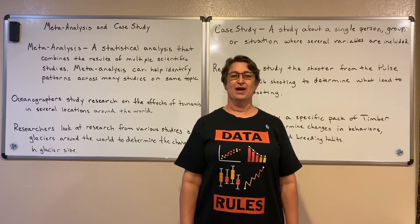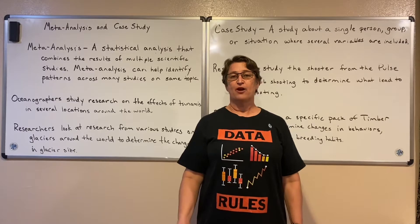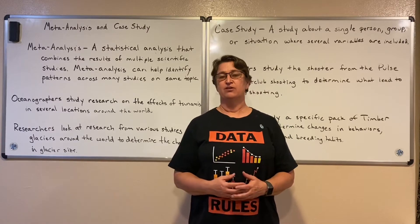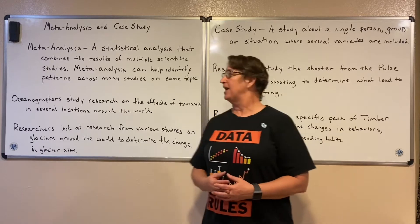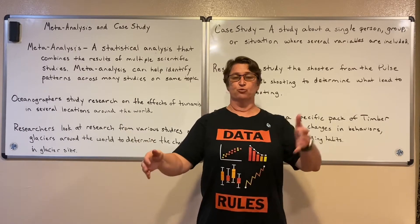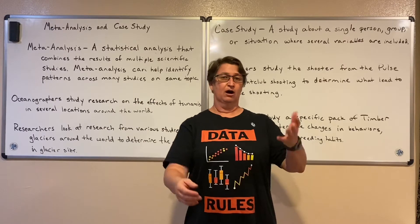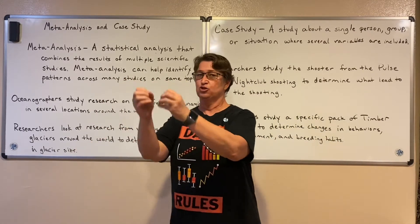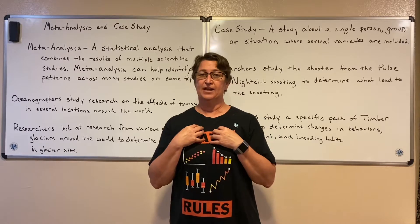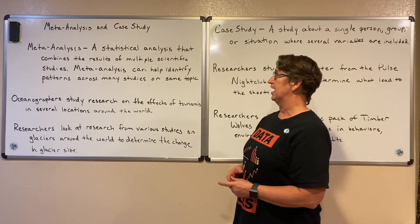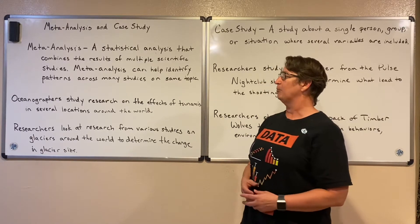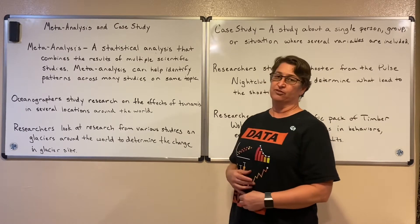Hello, I'm Patti Simpson with SimpsonMab. In statistics there are various ways to do different studies. Let's look at a couple of different types of studies: the meta-analysis and the case study. A meta-analysis is just a study of studies. Several different researchers collect data on some topic, and I come along and use the data from all of those different studies — that's a meta-analysis. It's a statistical analysis that combines the results of multiple scientific studies, and it can help identify patterns across many studies on the same topic.